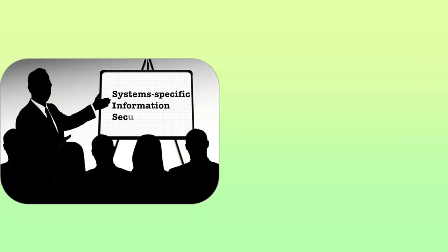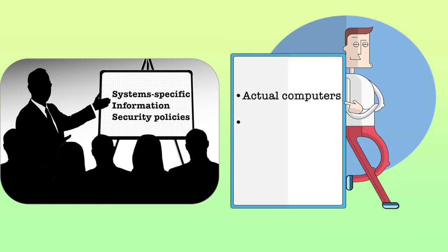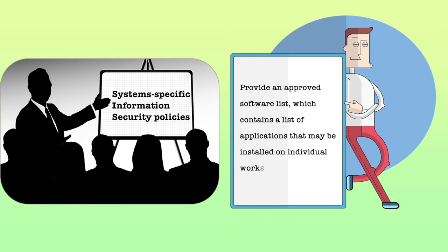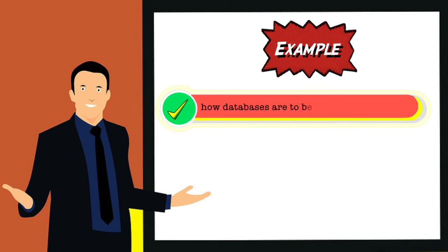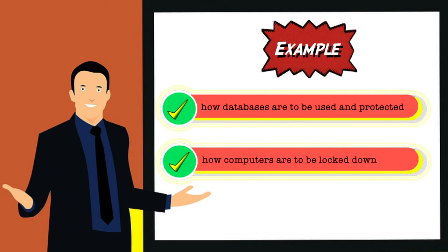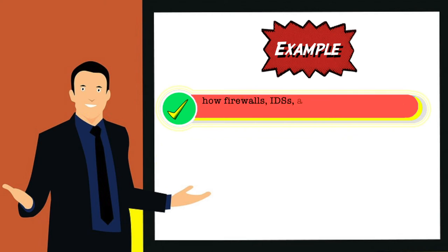The System-Specific Information Security Policy presents the management decisions that are specific to actual computers, networks, applications, and data. This type of policy may provide an approved software list which contains a list of applications that may be installed on individual workstations. For example, this policy may describe how databases are to be used and protected, how computers are to be locked down, and how firewalls, IDSs, and scanners are to be employed.